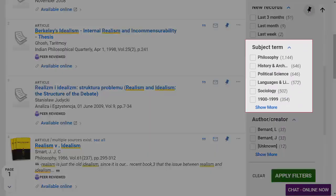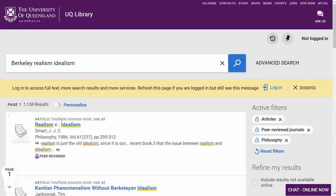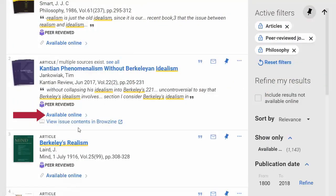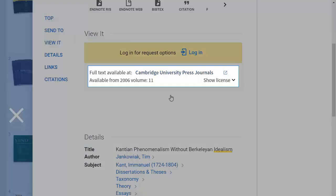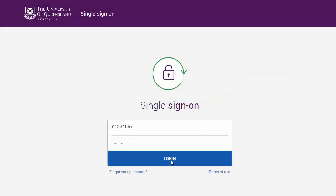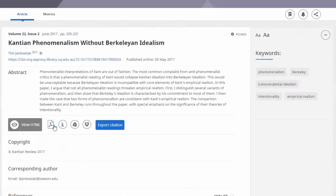Because UQ Library Search searches all disciplines such as nursing, law and engineering, it is highly recommended that you limit your search to the discipline of philosophy. Under Subject Term, select Philosophy. To access a full text, click Available Online. Then click the Full Text Available At link. You'll be prompted to log in if you haven't already done so.